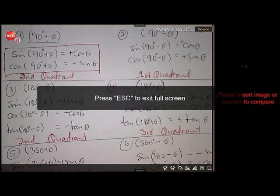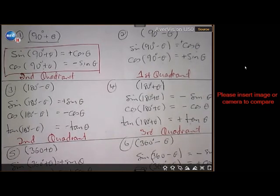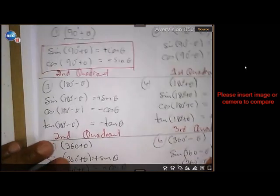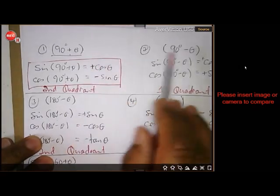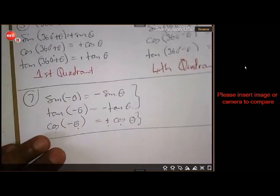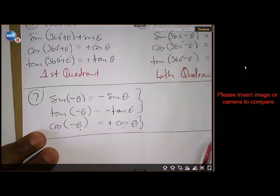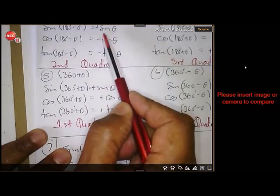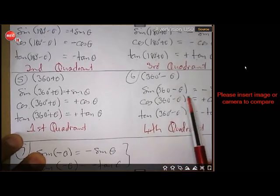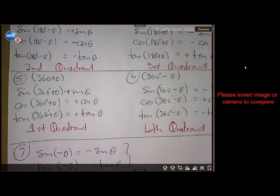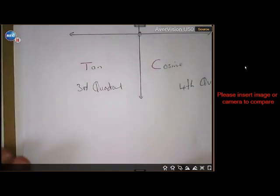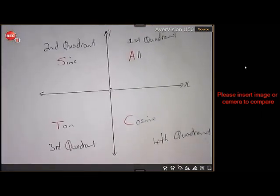So we've discussed all the angles: 90 plus, 90 minus, 180 minus, 180 plus, 360 plus, 360 minus, and negative angles. Today we're going to focus on an easy way to remember which results are positive and which are negative, because it can be a nightmare to keep track.